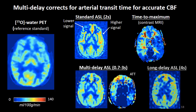Even pushing to a long-label, long-delay ASL with a four-second post-label delay, you see uniform CBF along the cortex matching the PET. Notice the basal ganglia still underestimates because it has different relaxation properties. This is an example of walking through a patient with very severe arterial transit times and modifying the ASL acquisition through comparison with what the reference standard should be.